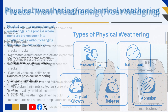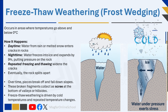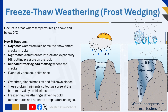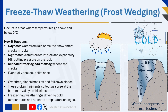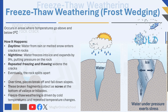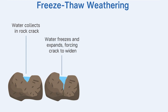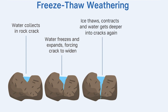One common type of physical weathering is called freeze-thaw, also known as frost wedging or frost shattering. This happens in places where temperatures repeatedly go above and below freezing. Water from rain or melted snow enters cracks and holes in rocks during the day. At night, when the temperature drops below zero degrees Celsius, the water freezes and turns into ice. Ice takes up more space than water, so it expands by nine percent and puts pressure on the rock, wedging it apart.